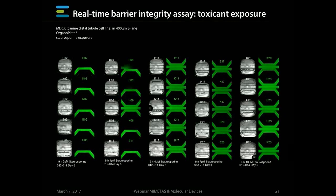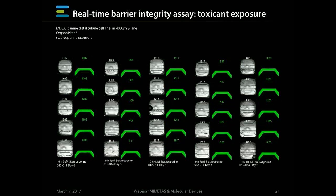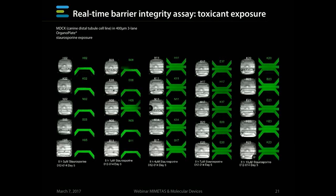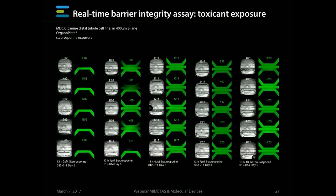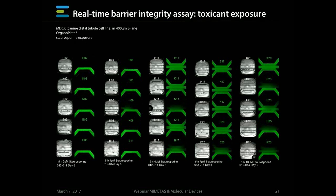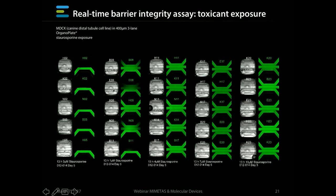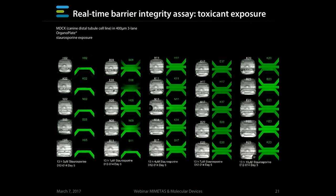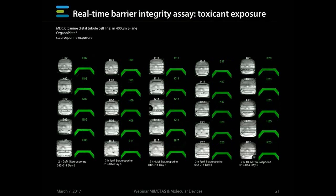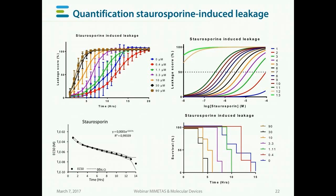Here we have MDCK dog-kidney cells exposed to a concentration series of staurosporin, which is well known for inducing leakiness in kidney tubules. With increasing concentration of staurosporin from left to right, the tubules start to leak — at high concentrations leaking starts earlier, and at low concentrations it takes more time. We can quantify this showing the leakage score over time, demonstrating that at low concentrations tubes start to leak more slowly, and at high concentrations leaking starts earlier.